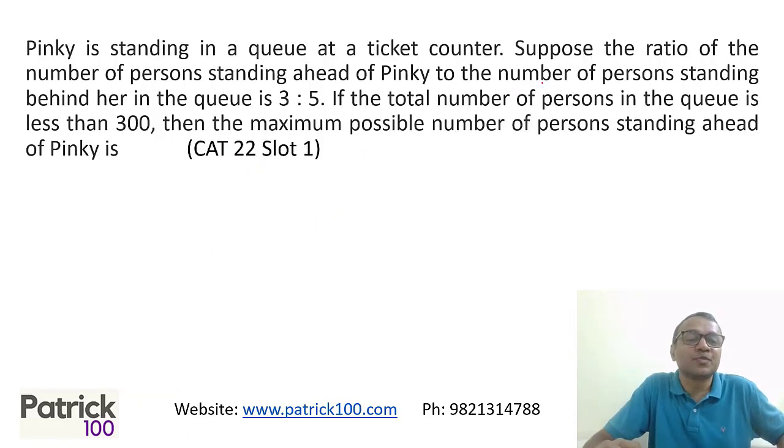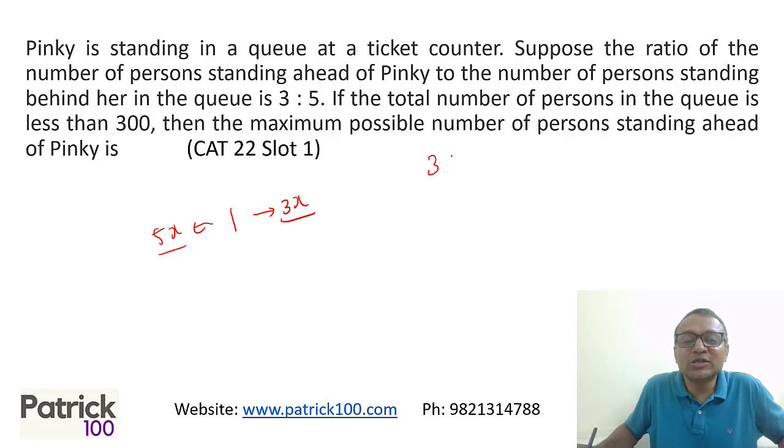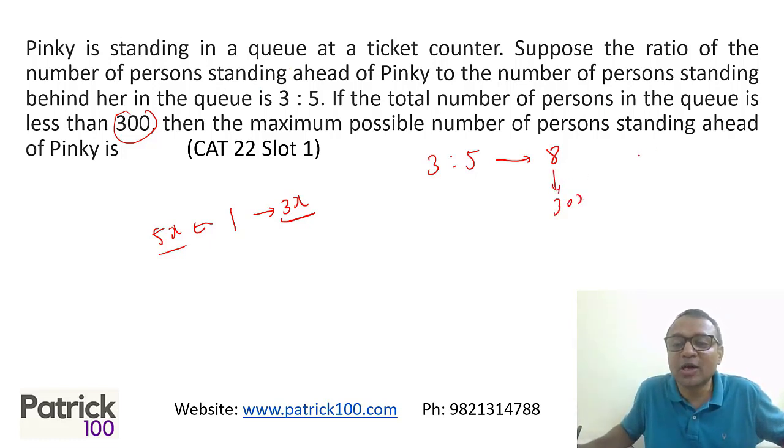Let's look at another question. Pinky is standing in the queue at a ticket counter. Suppose the ratio of number of person standing ahead of Pinky. So let people standing ahead of Pinky be 3X. 3 is to 5. And behind Pinky is 3 is to 5. So 3X and 5X. So that means if I take the ratio as 3 is to 5, let's say. Total is 8. This total has to be less than 300. Because including her is 300. And addressing less than 300. So this 8 has to be less than 300. So how many it is possible?